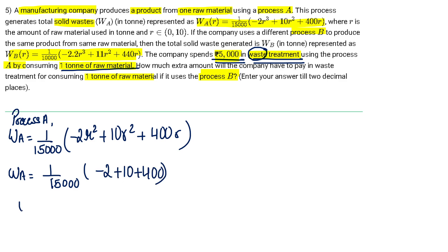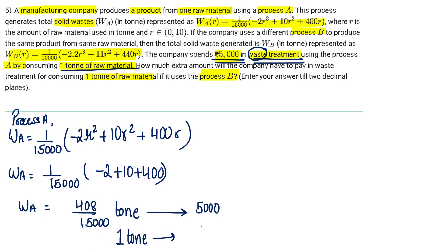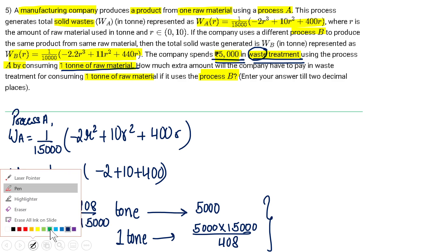The waste produced in process A at r = 1 is 408/15000 tons. To get the treatment of this amount of waste we pay ₹5000, so for one full ton of waste the cost is ₹5000 × 15000/408. This applies the unitary method to find the rupees required for treating one ton of waste. Now let's calculate the waste produced in process B.